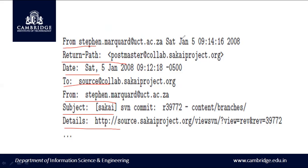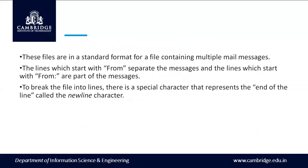These files are in a standard format for containing multiple mail messages. The lines which start with 'from' separate the messages, while lines which start with 'from:' (with a colon) are different. When you search for lines starting with 'from', you get only those lines; when you search for lines starting with 'from:', you get only those lines. To break files into lines there is a special character — the newline character, that is backslash n (\n).